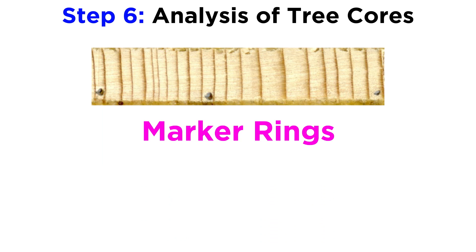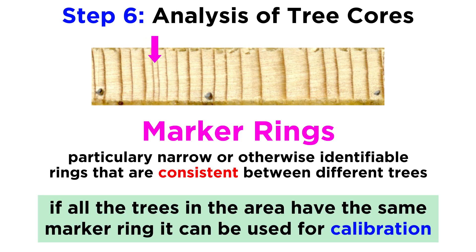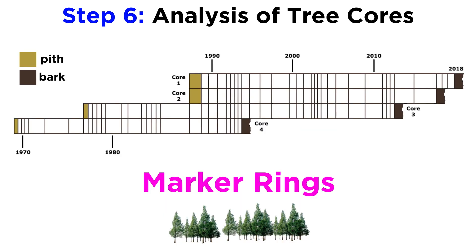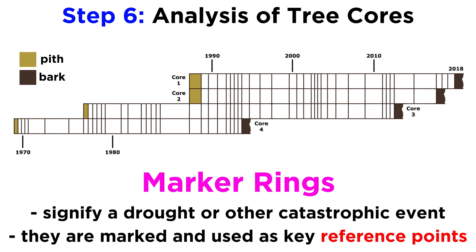A major goal of all these methods is to search for marker rings — rings that are particularly narrow or have other identifiable characteristics consistent between different trees. An example would be a pattern of several average-width rings, followed by an extremely narrow ring, then back to regular widths. If all trees in an area share a similar pattern and especially the same marker ring, the researcher can use that ring to calibrate the other trees. These marker rings correlate to a specific limiting factor that impacted all trees in the area, usually a drought or catastrophic event. Locations where marker rings match up are noted and used to verify initial counts.